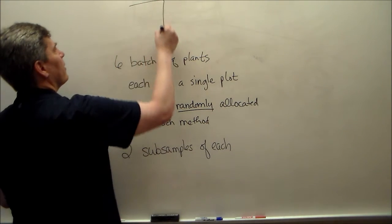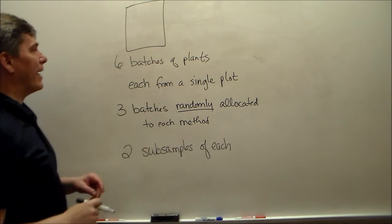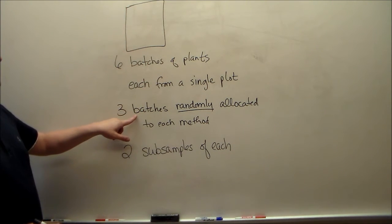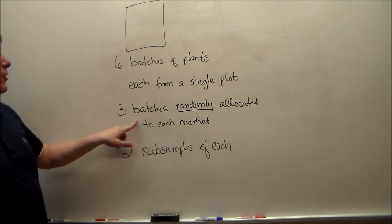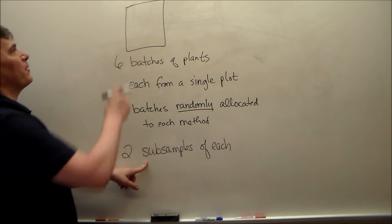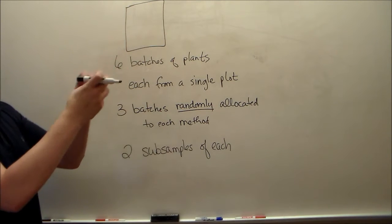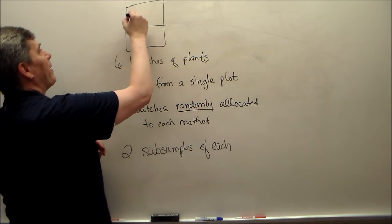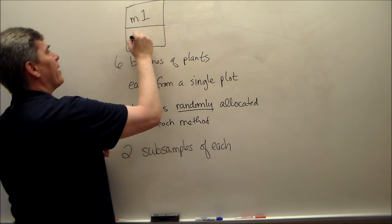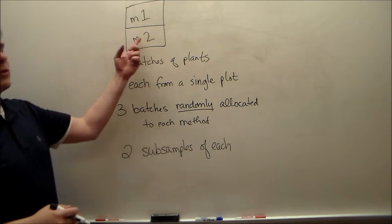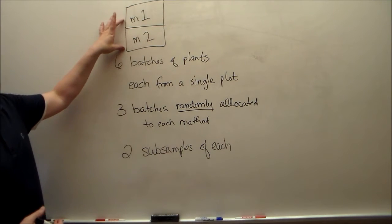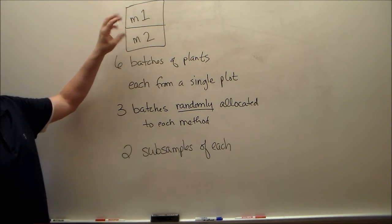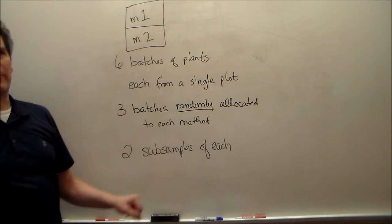That's why it's called a split plot. You've got your plot of land that gives us the batch — one of six — one of three going to each method. You're taking the cotton plants, shredding them up, and splitting into two parts, measuring one here and one here. Two subsamples or two measurements. You see why this is called a split plot: you're taking this plot of batches and splitting it between two subsamples.